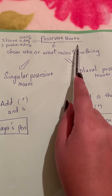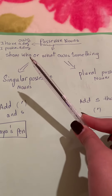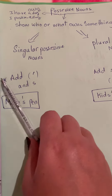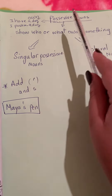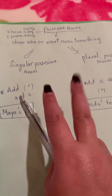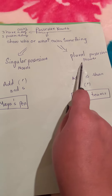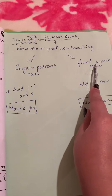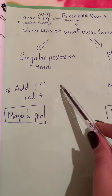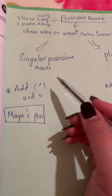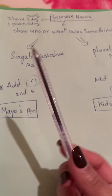Possessive nouns show who or what owns something. They show you who owns something — they show you what each thing is for. Let me show you. We start with singular possessive nouns, because possessive nouns come in two parts: singular possessive nouns or plural possessive nouns. Let's start with the singular form. For a singular noun, we will add an apostrophe then S.